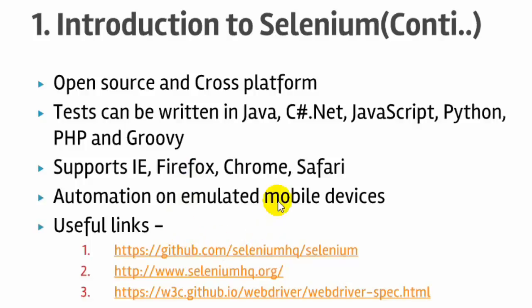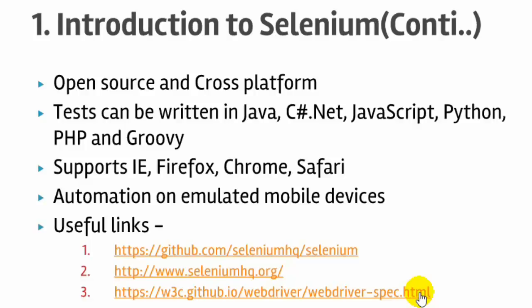Here are some important links related to Selenium WebDriver that you can check out. The first is github.com/SeleniumHQ/Selenium, which is the source code of the Selenium project hosted on GitHub. The site SeleniumHQ.org is the original Selenium website where you get lots of information like latest releases, conferences related to Selenium, documentation, and more. Finally, w3c.github.io/webdriver/webdriver-spec.html gives a description about the WebDriver protocol, which we will look at in the next lectures.